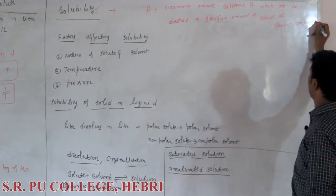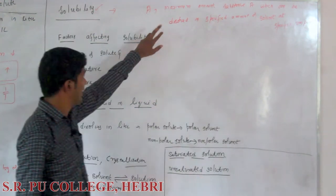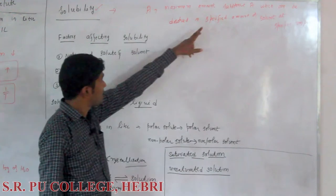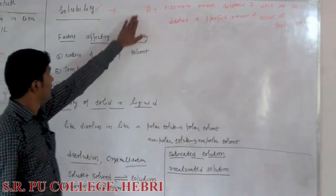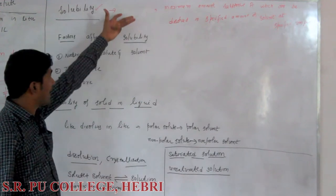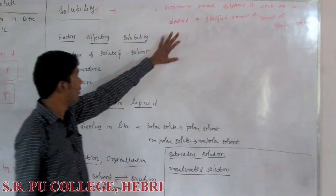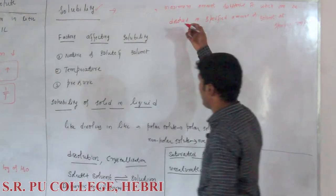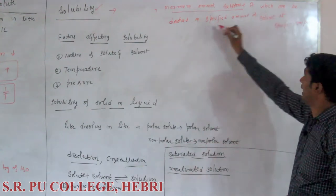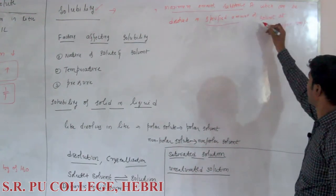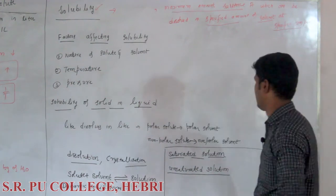For any substance, its solubility is the maximum amount that can be dissolved in a specified amount of solvent at a specified temperature. This applies to any substance — sugar, salt, or anything else. I will give one example.